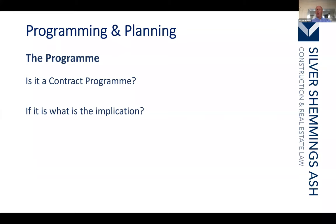Under the JCT form, unless there is sectional completion, there is simply one completion date. If you fail to complete by that date, liquidated damages apply — for example, £5,000 per week. The contract says nothing about what happens if you fail to comply with the program sequence. All it requires is completion by the completion date, not in any particular sequence. So incorporating a contract program into a standard JCT without amendments has very little effect — the contractor can revise it at their own choosing.